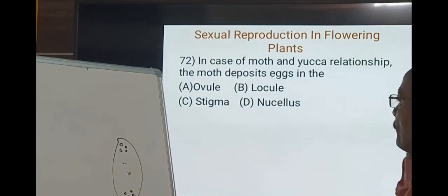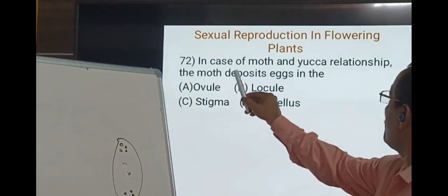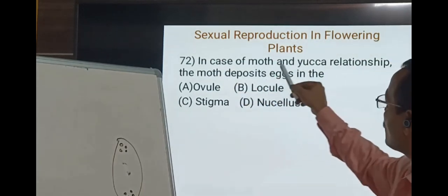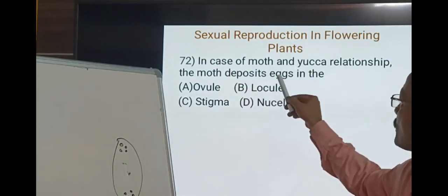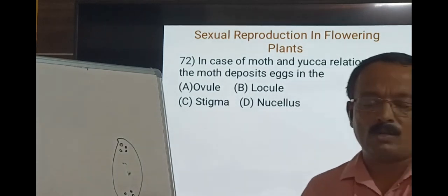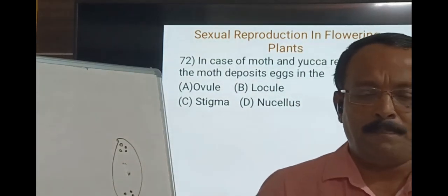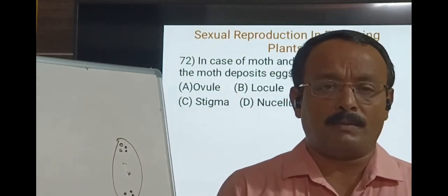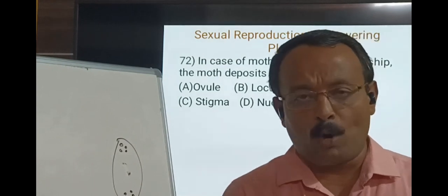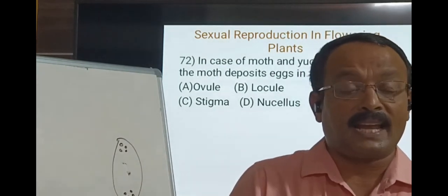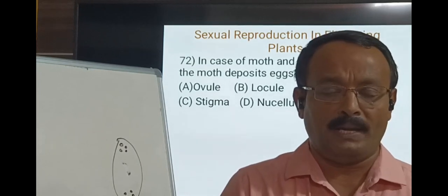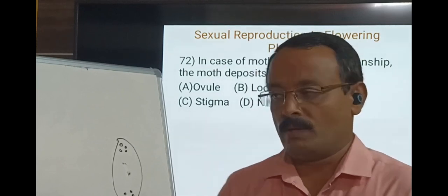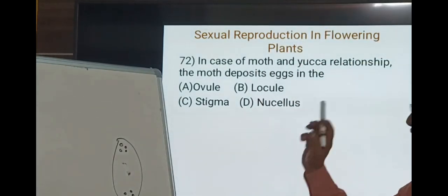In the case of moth and Yucca relationship, the moth deposits its egg in the cavity of the ovary, and that cavity of the ovary is called the locule. The answer is B — locule.